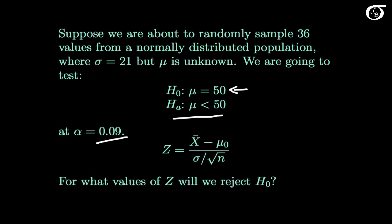Since we are sampling from a normally distributed population and the population standard deviation sigma is known, the appropriate test statistic is the z-test statistic. If the null hypothesis is true, this z-test statistic will have the standard normal distribution. The first question is: for what values of z will we reject the null hypothesis?